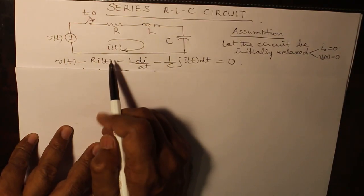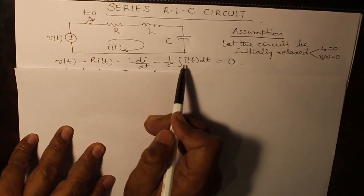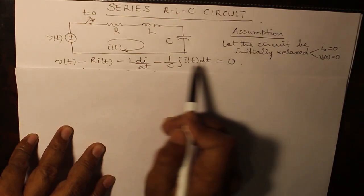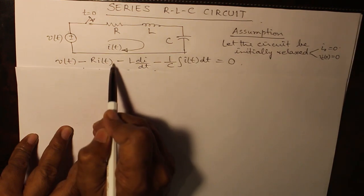It's an integral differential equation as you can see: V(t) minus R*i(t) minus L*di/dt minus 1 over C integral i(t)dt equals 0. This is the voltage across the capacitor, this is the voltage across the inductor, and this is the voltage across the resistor.